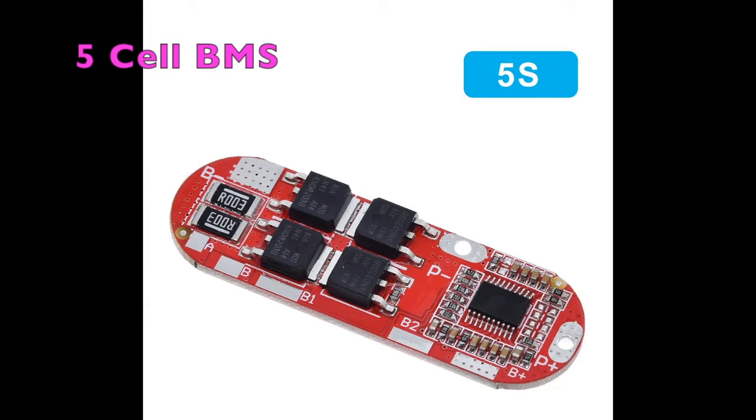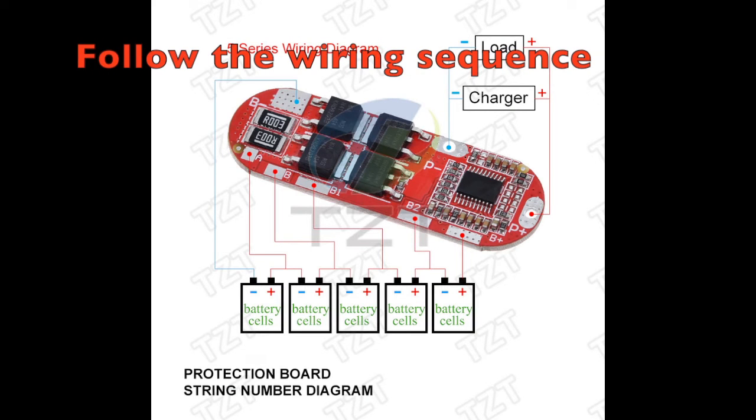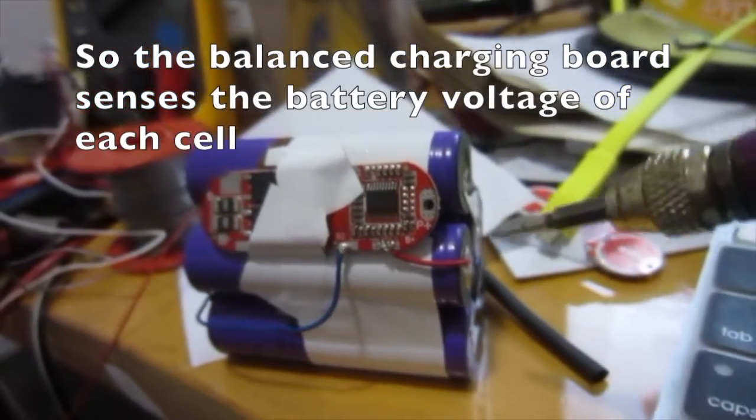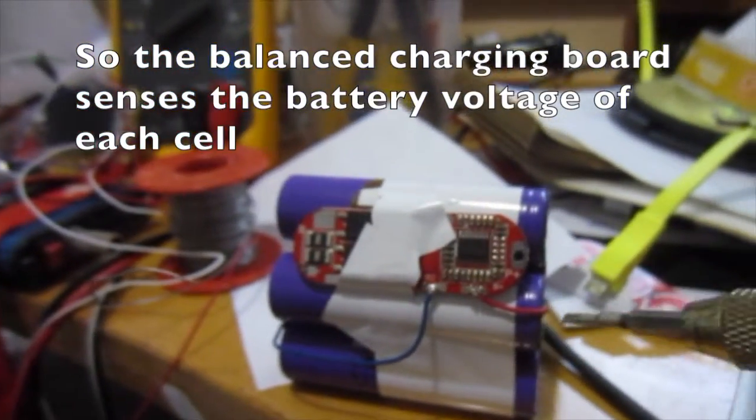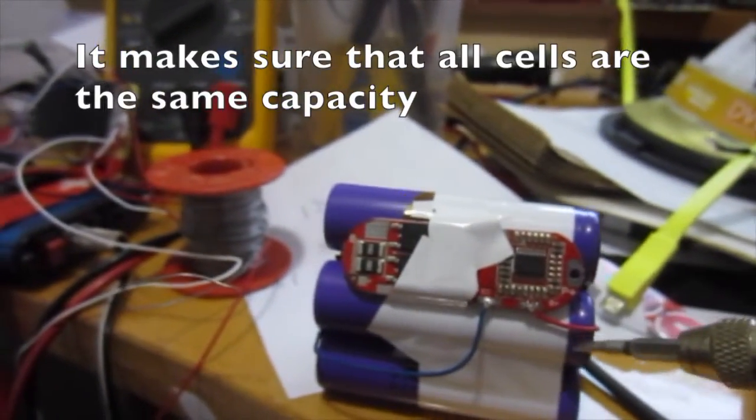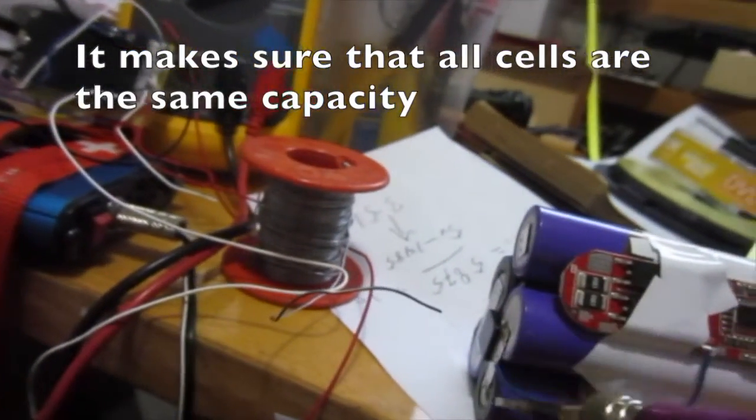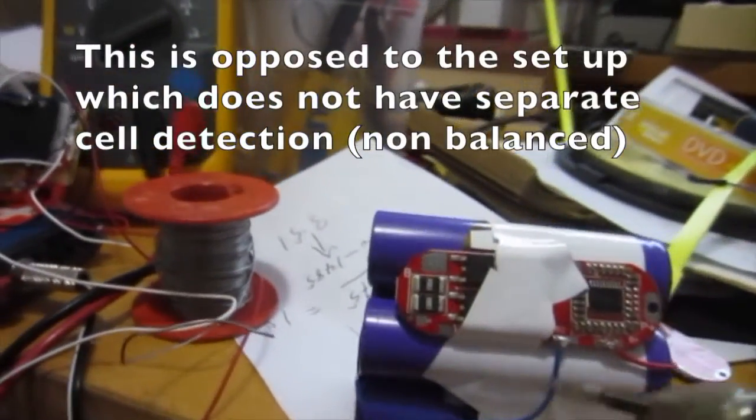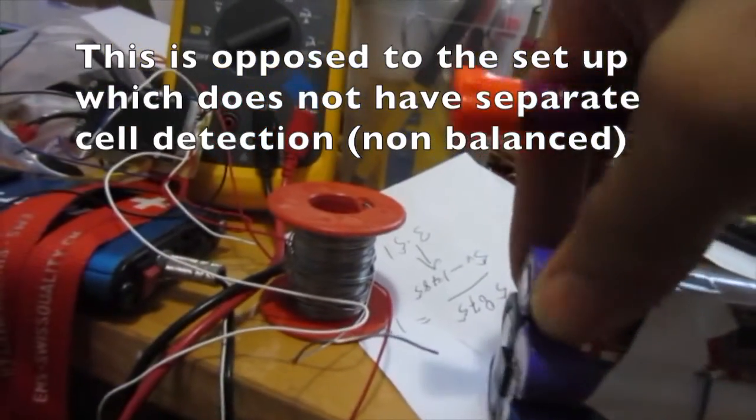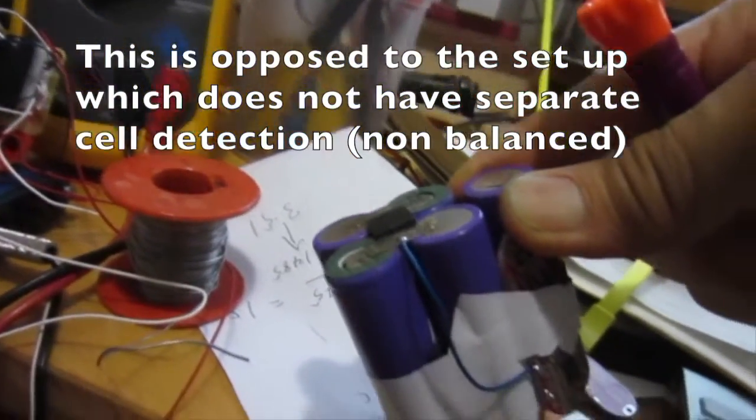We use the 5 cell BMS. We follow the wiring sequence. So the balanced charging board senses the battery voltage of each cell. It makes sure that all cells are the same capacity. This is opposed to the setup which does not have separate cell detection called non-balanced.